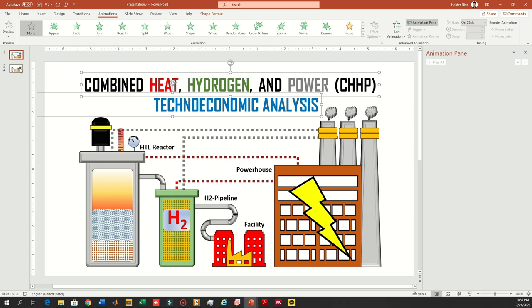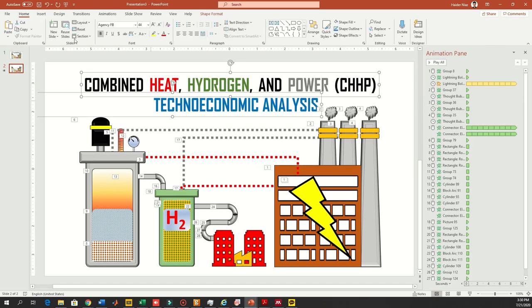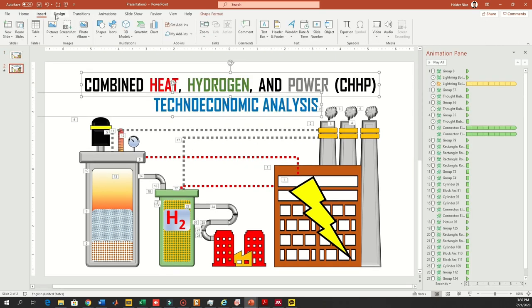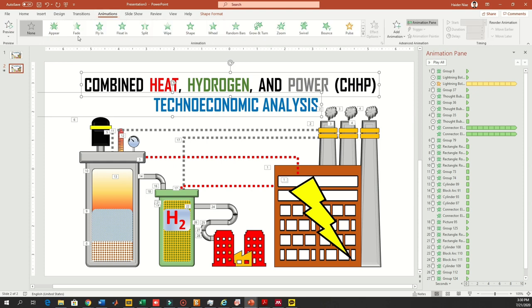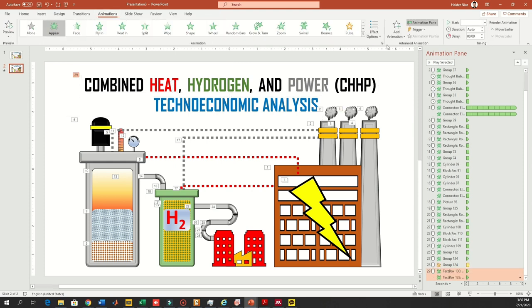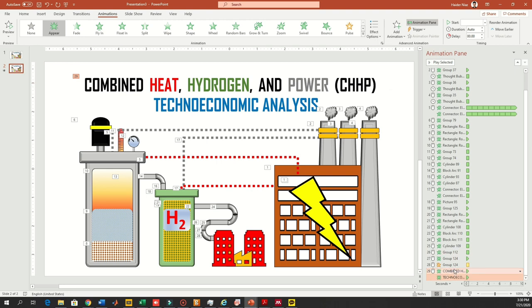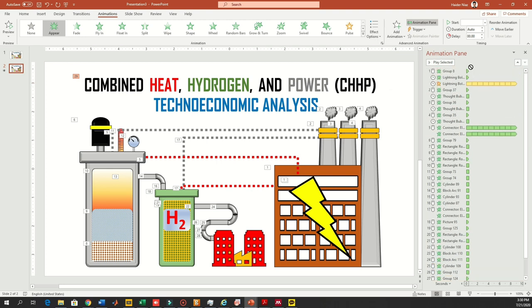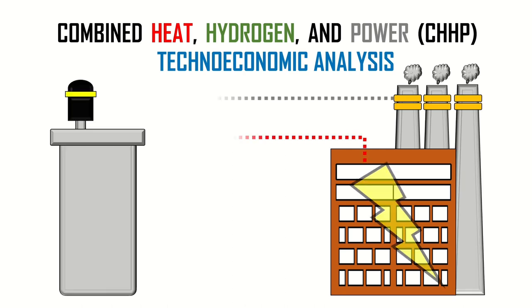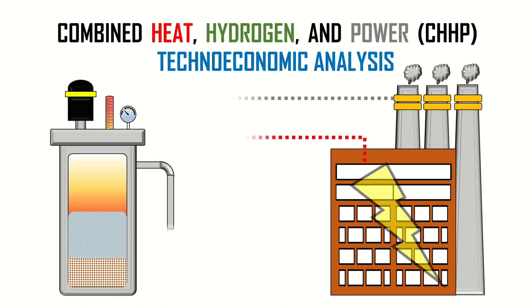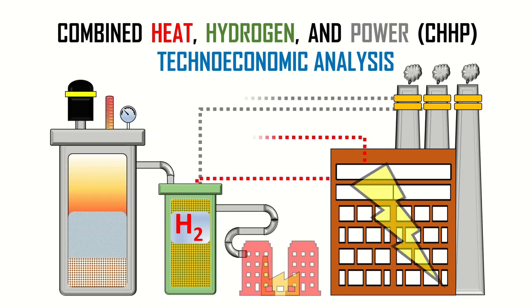Now I'm going to copy the text back and add an animation to it. When you add an animation, it appears at the end, but you have different options — you can make the text appear all at once or as a paragraph. I'll select and bring it to the top of the animation sequence so my text comes first, then the powerhouse, then the chimneys, then the lines, the reactor, the pipeline to the hydrogen tank, then comes the facility.